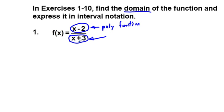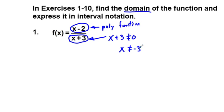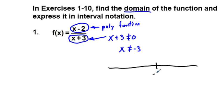What do we know about a denominator? Can you divide by 0? In math or in algebra, no. So we know that x plus 3 cannot equal 0. If we solve by subtracting 3 from both sides of the equation, we know that x cannot equal negative 3. That value of negative 3 is the only exclusion to the domain. On a number line, we place our critical value at negative 3.